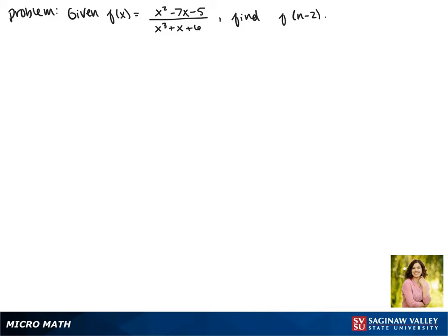Given that f of x equals x squared minus 7x minus 5 all over x cubed plus x plus 6, find f of n minus 2.